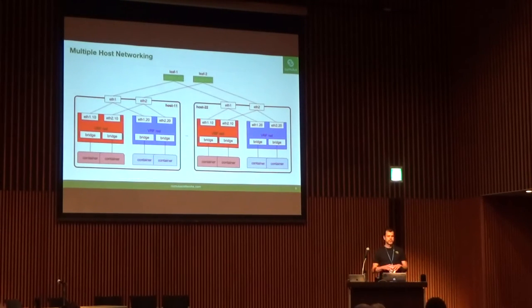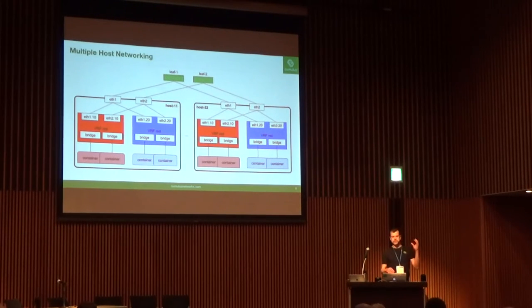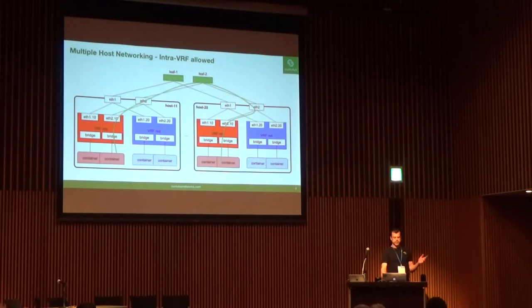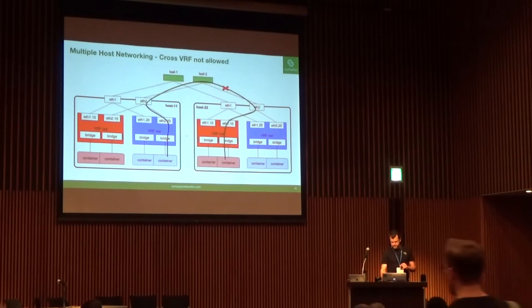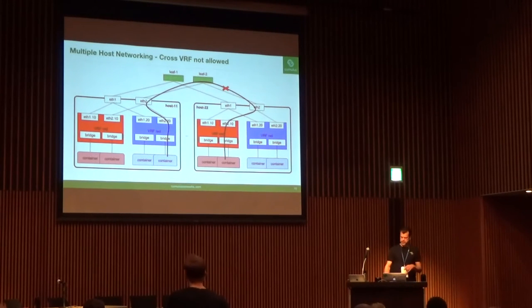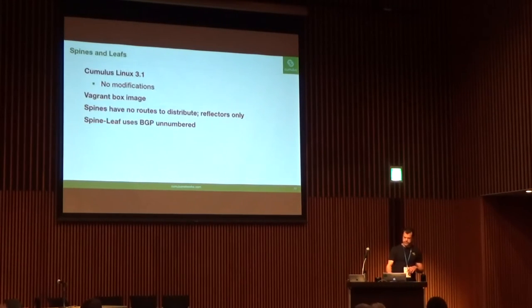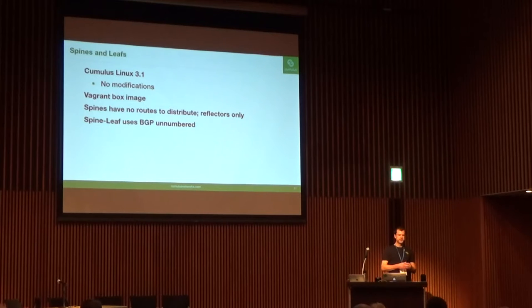As we extend out to multiple hosts, same concepts. Every one of the servers, the leafs, the spines — they're all set up the same. We've got two VRFs: VRF red and VRF blue. Those VRFs provide isolation so containers running on one host in VRF red can talk to containers on another host in VRF red. The network provides the connectivity, but we don't allow cross-traffic between containers in blue and containers in red. The spines and leafs are all running Cumulus Linux — it's my favorite distribution.